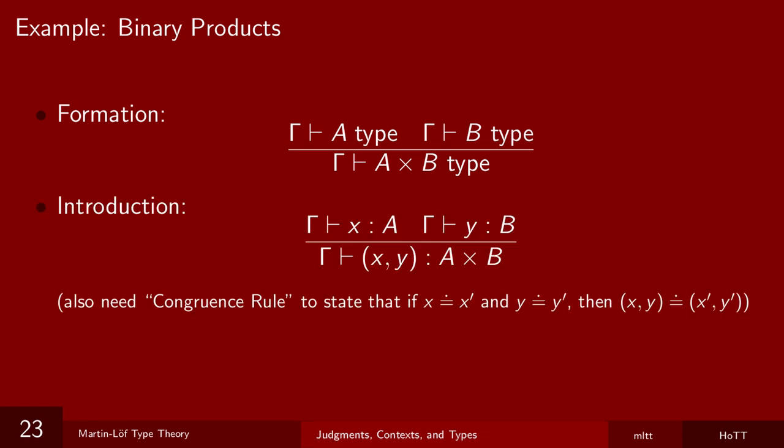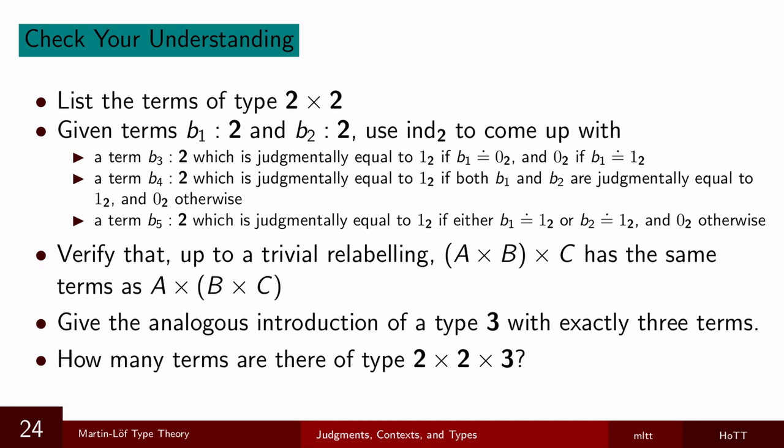And how do we get terms of this type? Well, in the same way that we said that points of the square are pairs of points on the interval, terms of type a times b are pairs of terms of a and b. Formally, if x is a term of type a in context gamma and y a term of b in gamma, then in gamma, the pair xy is a term of type a times b. To make sure that the relation of judgmental equality behaves right, we need to throw in a so-called congruence rule asserting that judgmental equality of pairs is just component-wise judgmental equality. And then, as mentioned, we'll cover the elimination and computation rules once we have more of the heavy machinery of MLTT on the table. But the main thrust of those rules will be asserting that the only terms of this type are pairs.